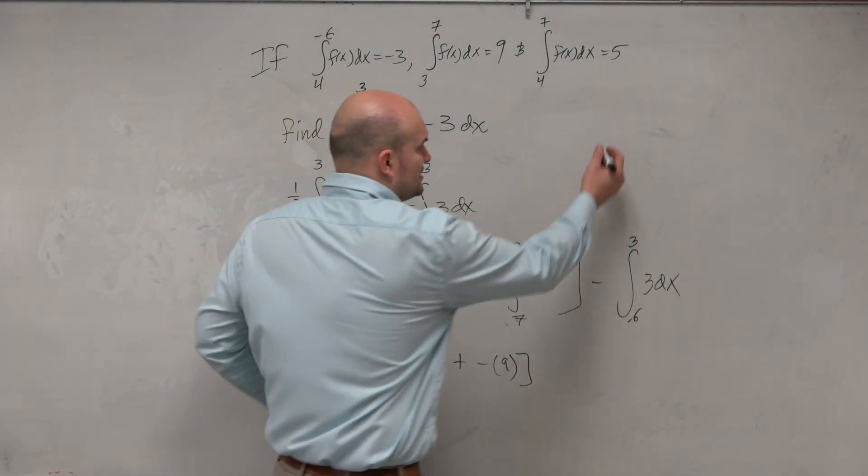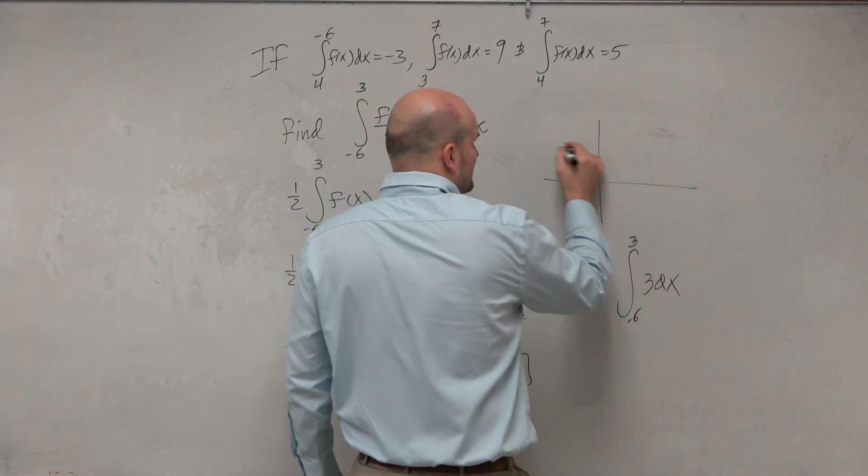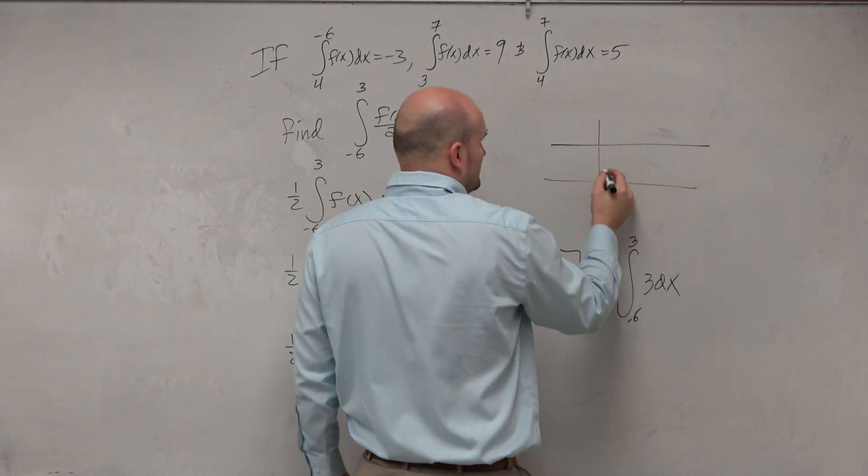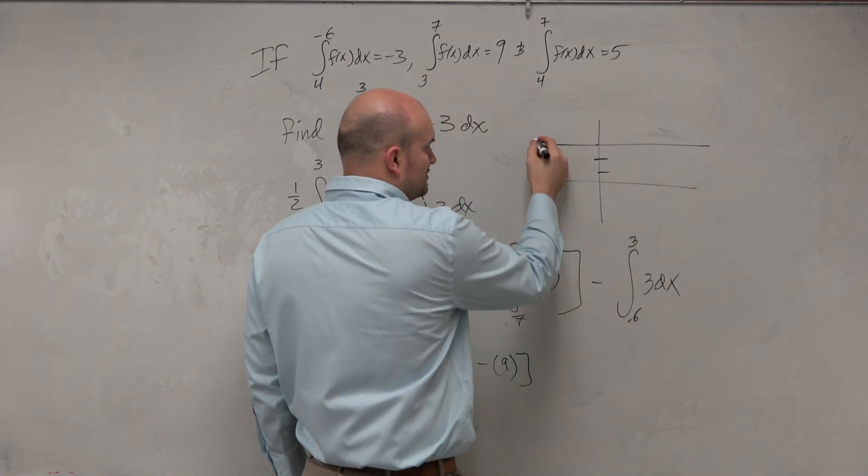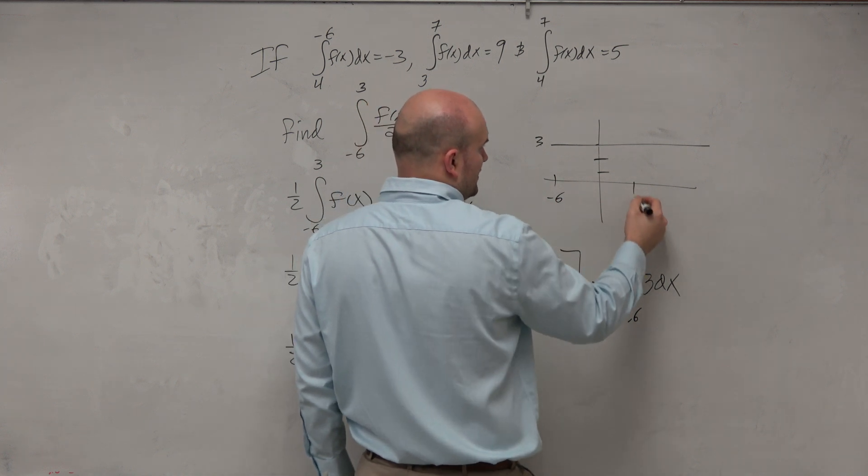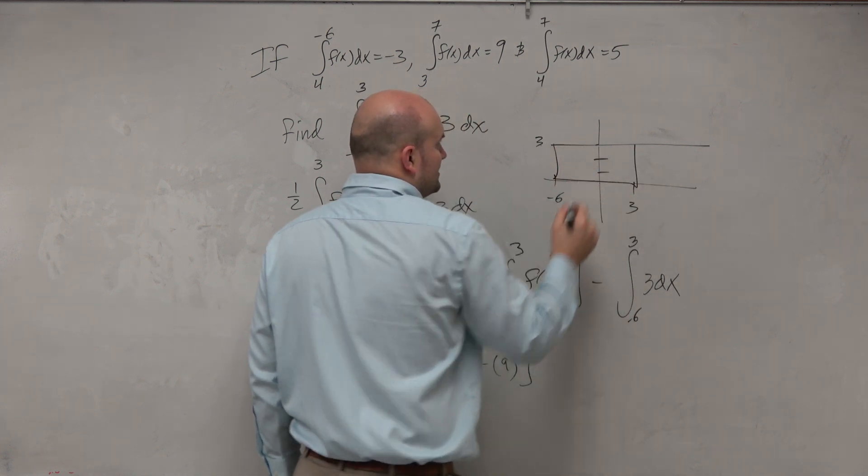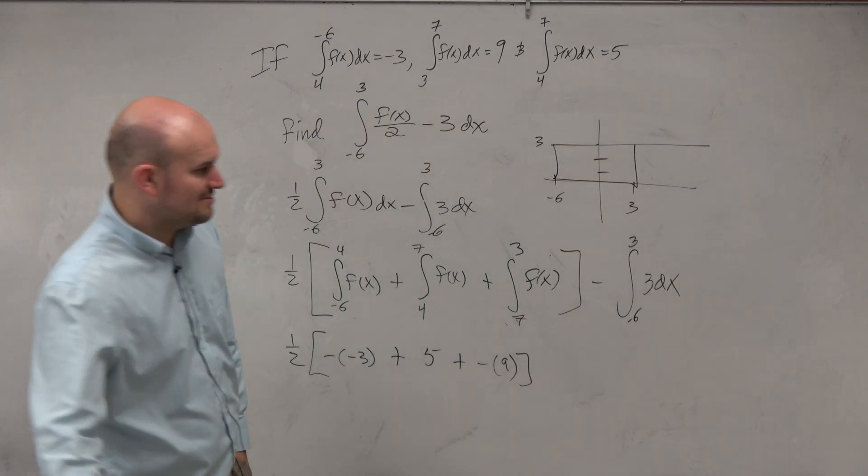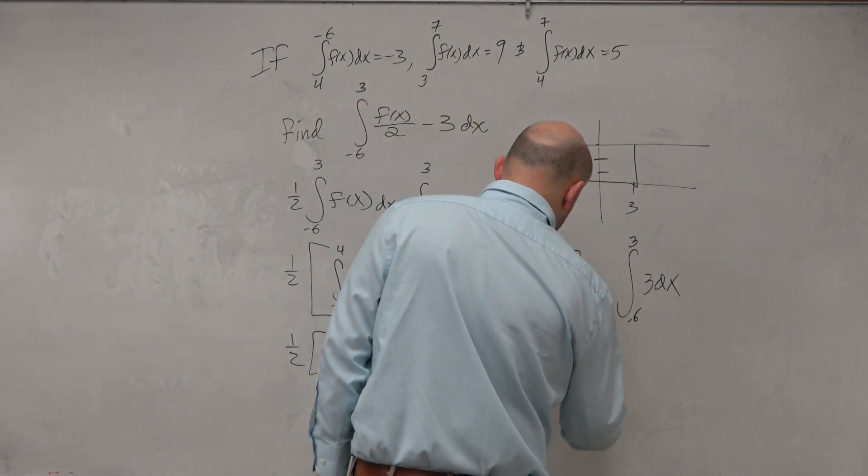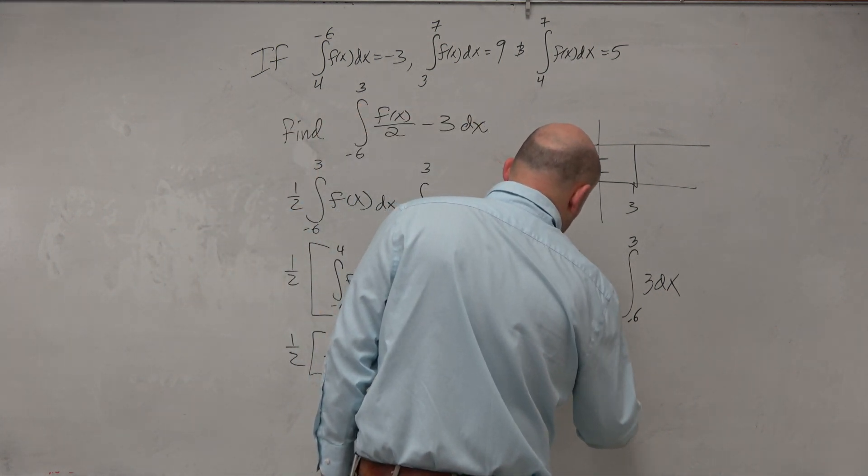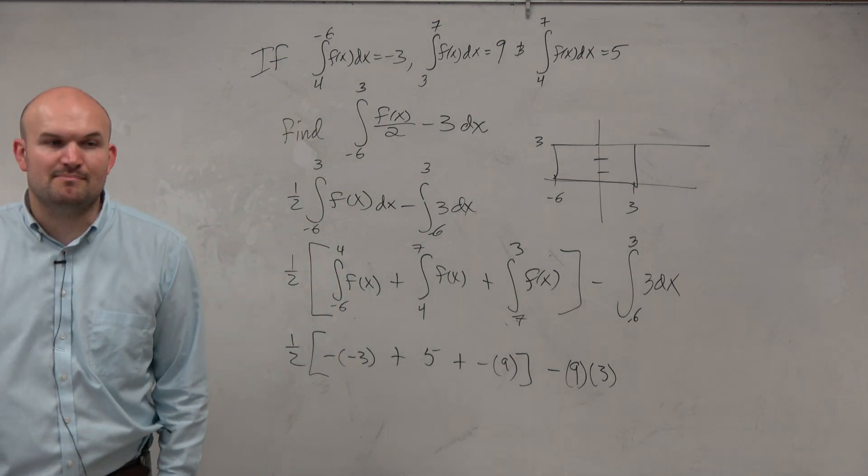Could we integrate this and then evaluate it? We could. Or could we just figure out what the length and width is of this rectangle? Because we know that's really going to just give us a rectangle. Y equals 3, and we're going from negative 6 to 3. What's the length and the width? 9 times 3. It's easier to just multiply 9 times 3 than actually integrating and doing all that math.